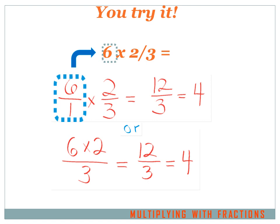Alright, 6 times 2 thirds. I'm going to rewrite the 6 as 6 over 1 — 6 over 1 is the same thing as 6, since any number divided by 1 is the same number. So, 6 over 1 times 2 over 3: I multiply my two numerators, 6 times 2, and that equals 12. Then I multiply my denominators, 1 times 3 equals 3, and my answer is 12 over 3. But that's an improper fraction — I can divide both the top and the bottom by 3 and come up with a whole number, 4. So 6 over 1 times 2 over 3 is the same thing as 6 times 2 over 3.